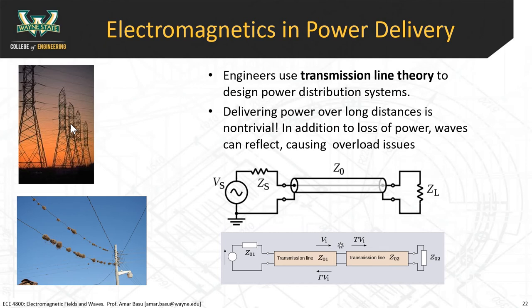If you stand under massive power distribution lines, don't assume there's no significant field around you. An artist demonstrated this by placing fluorescent bulbs on the ground underneath power lines — not connected to any electrical line — and they lit up. These lines carry kilovolts. Even though there's an insulator around the wire, the field lines extend outward beyond the insulator, creating very strong electric fields tens of meters away from the power lines. Just something to be aware of.